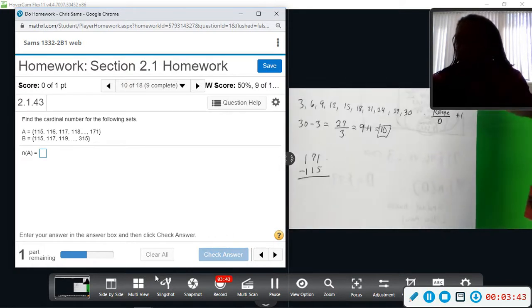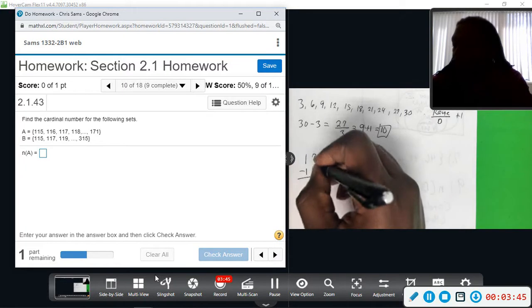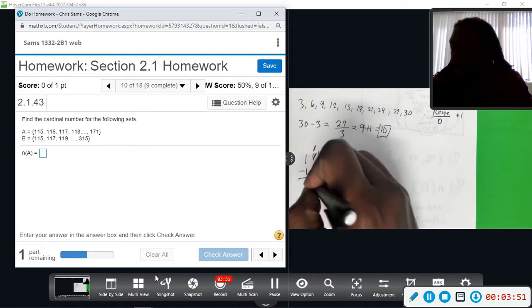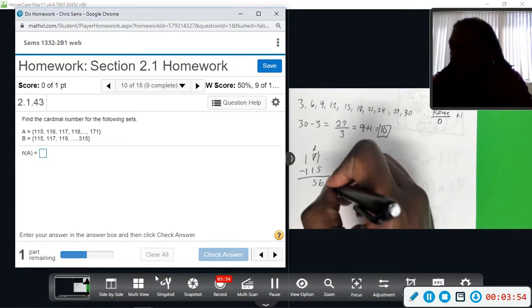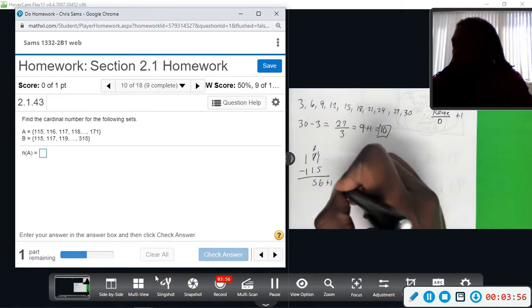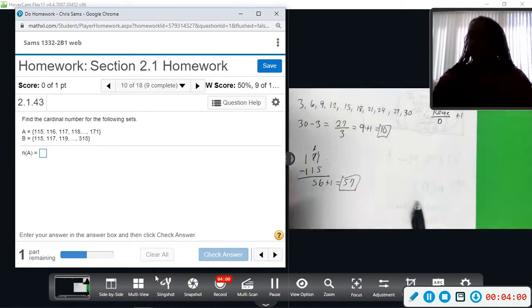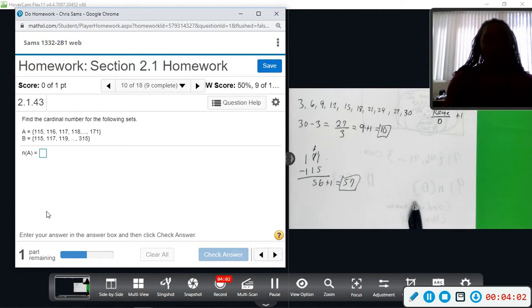And I'm running off the page. This is a borrow 1, 11. This will give me 56. 56 is the range, plus 1 gives me 57. So cardinal number of set A is 57.